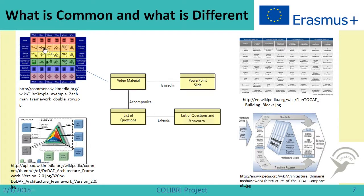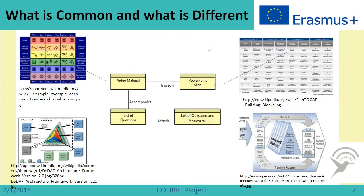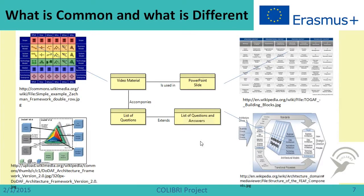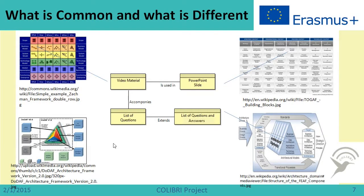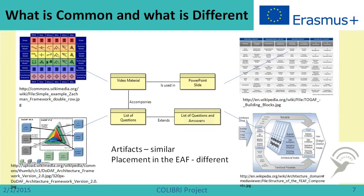For example, in the ZACHMAN architecture we would find this data model in a specific block. In TOGAF architecture, it would be found somewhere indirectly. For FEAF architecture, there is a specific line for data architecture. And in DODAF, there is also a place for data elements. So we can see that artifacts in different Enterprise Architecture frameworks may be similar, but the placement of architecture elements or artifacts may differ — similar artifacts, different structuring.